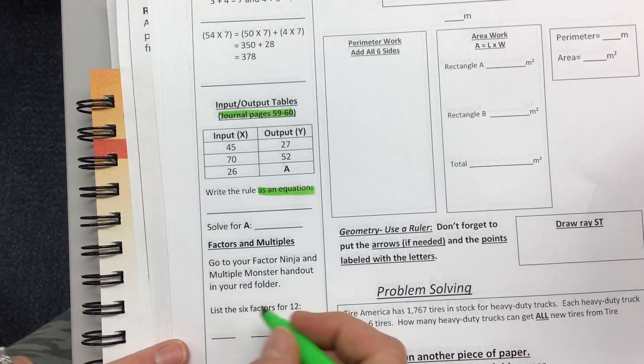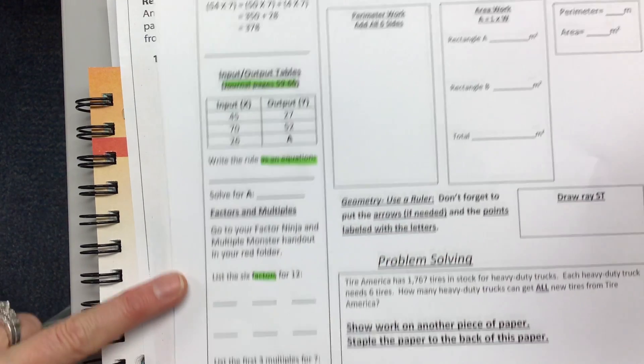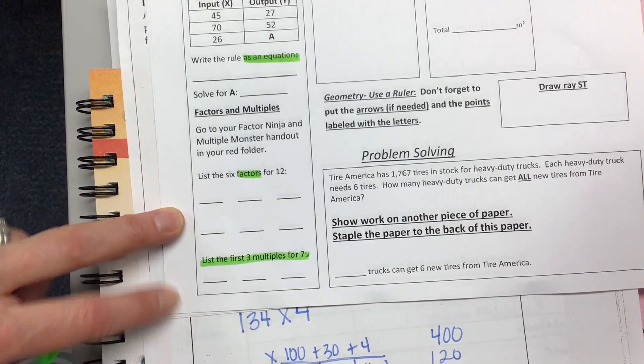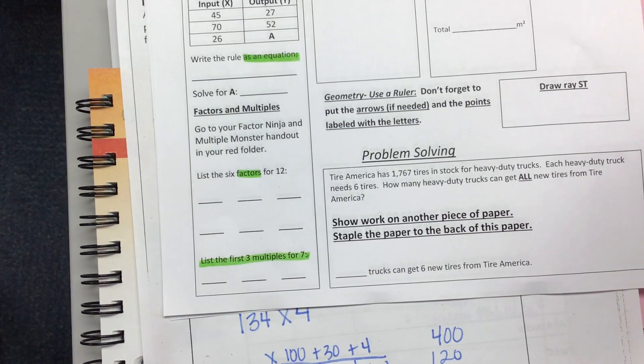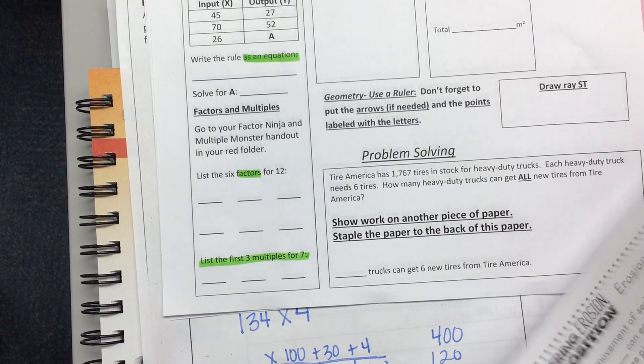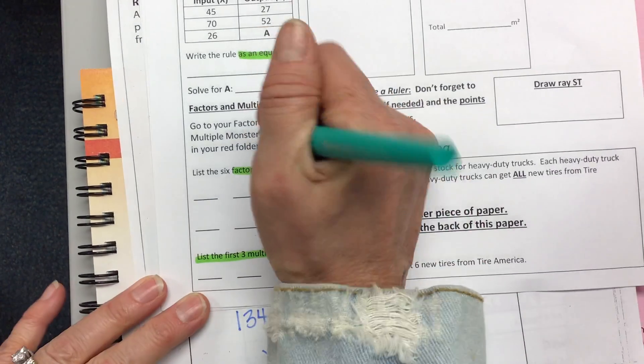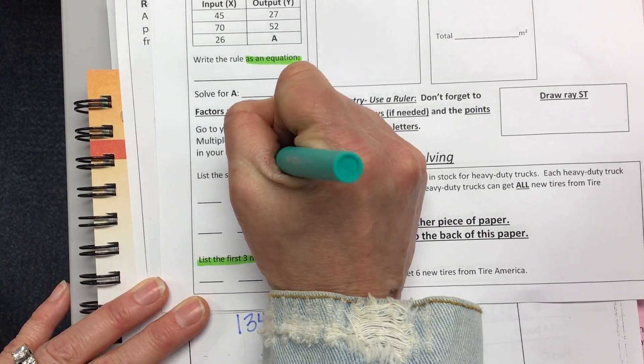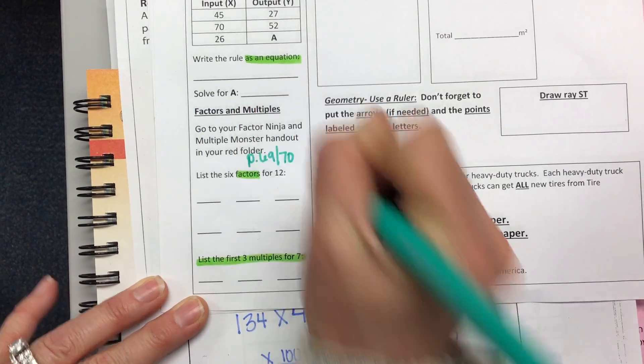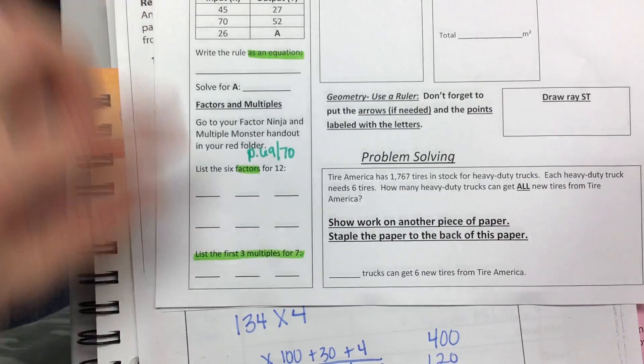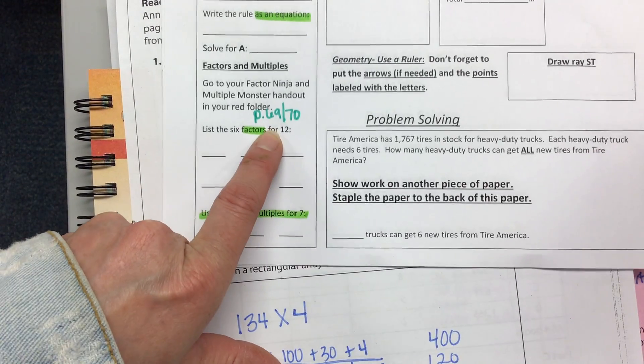List the 6 factors for 12. We should be able to do that pretty easily, and the first 3 multiples for 7. There are some pages in your pink math journal that talk about factors. That would be page 69 and 70.